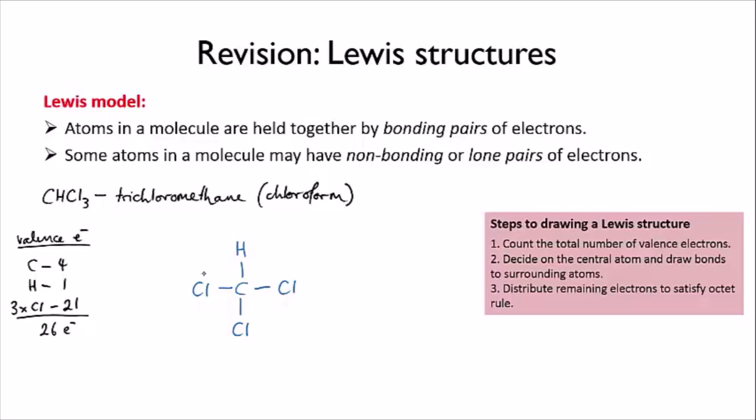With 18 electrons to distribute, I have enough for six electrons on each of the chlorines, which gives each one a full octet.